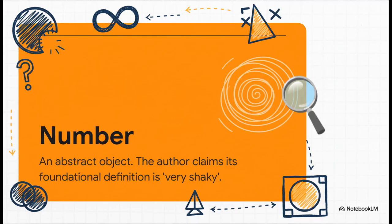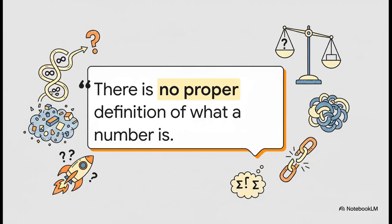So here's the author's big claim. We all just assume we know what a number is. We use them every day, right? But the argument here is that when you actually try to nail down the definition, it's surprisingly shaky. It gets called an abstract object. But what does that even mean when you're trying to be scientifically rigorous? In fact, the author puts it bluntly. They say there just is no proper definition of what a number really is. And think about that. If you can't even properly define your most basic building block, how in the world can you build a logically sound theory about infinity on top of it?